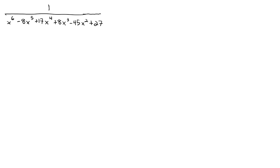Hello, mathematicians. This video is going to take a look at how we can bring together a lot of the concepts that we saw here in chapter 3 to graph an ugly looking function like this function here: 1 over x to the 6th minus 8x to the 5th plus 17x to the 4th plus 8x cubed minus 45x squared plus 27.